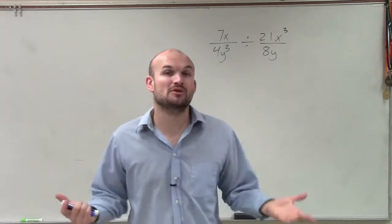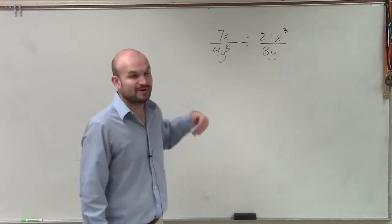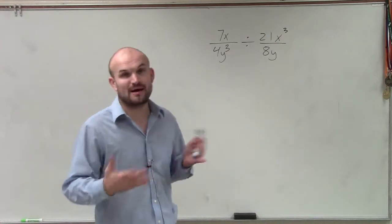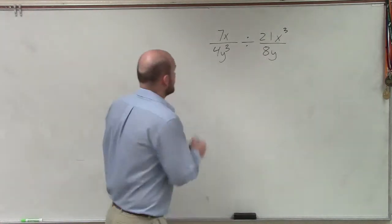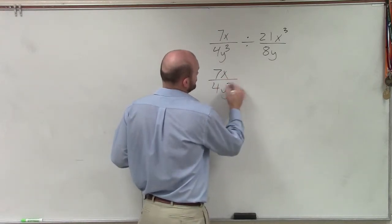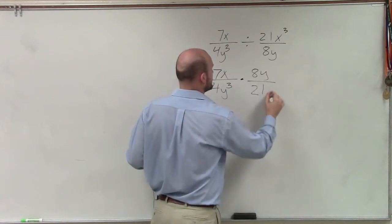Now again, remember when we're dividing rational expressions, we can rewrite this as a multiplication problem by multiplying by our divisor's reciprocal. So I'm just going to rewrite this problem as 7x divided by 4y cubed times 8y divided by 21x cubed.